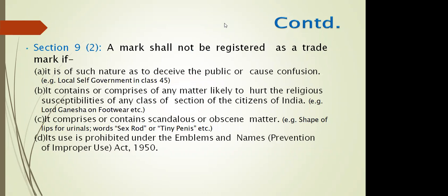Section 9(2) refers to marks that cannot be registered if they are of a nature to deceive the public or cause confusion, or if they comprise matter likely to hurt the religious sensibilities of a class. For example, using Lord Ganesha's name or any devotional entity's name on footwear or apparel in a disparaging manner will not be allowed. Scandalous or obscene matter, and the prohibition on use of certain emblems and names, are all prevented from being registered as a trademark.